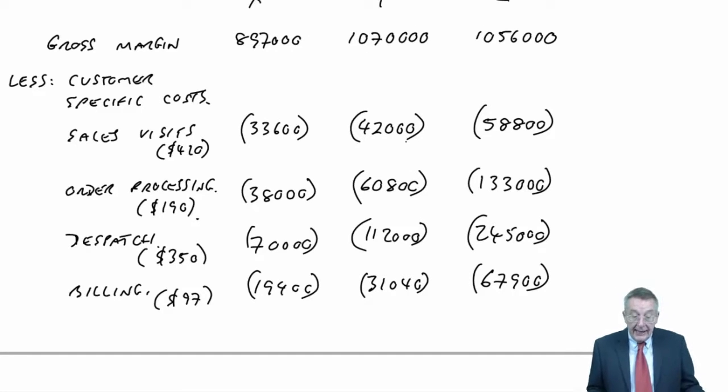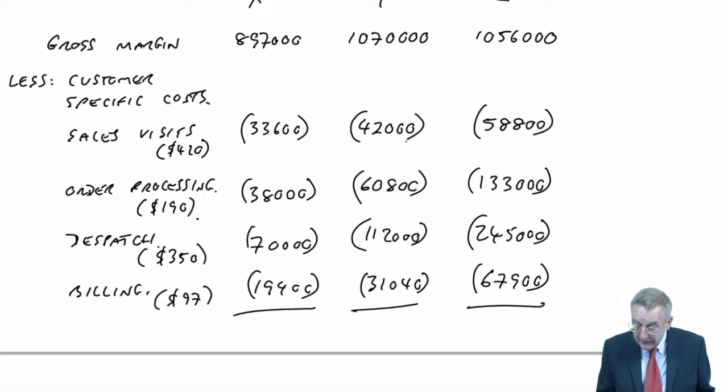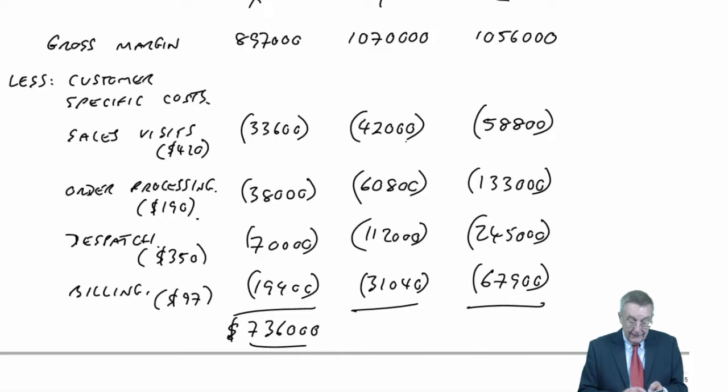Having charged these customer-related costs, we end up with a net margin for X: 897 minus 33,600, 38,000, 70,000, 19,400, I get 736,000. To Y, I get 824,160. And finally to Z, 1,056,000 minus the costs gives 551,300.